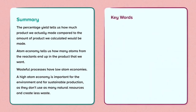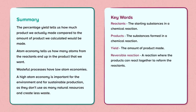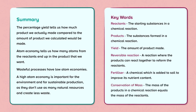Keywords: Reactants — the starting substances in a chemical reaction. Products — the substances formed in a chemical reaction. Yield — the amount of product made. Reversible reaction — a reaction where the products can react together to reform the reactants. Fertiliser — a chemical which is added to soil to improve its nutrient content. Conservation of mass — the mass of the products in a chemical reaction equals the mass of the reactants.